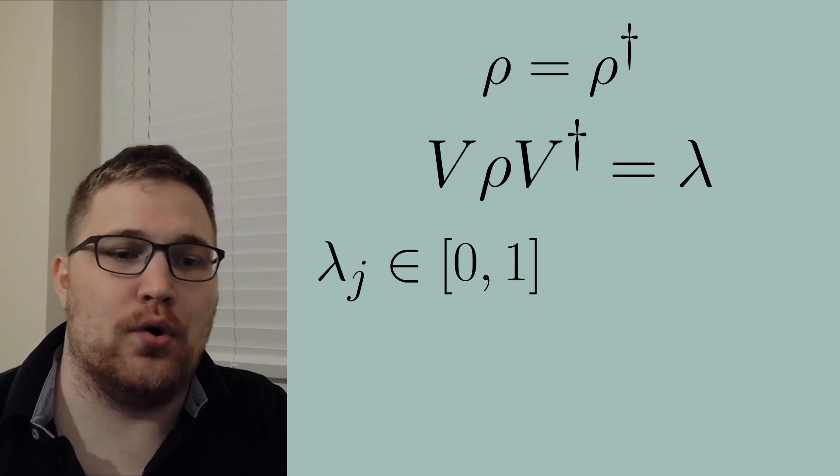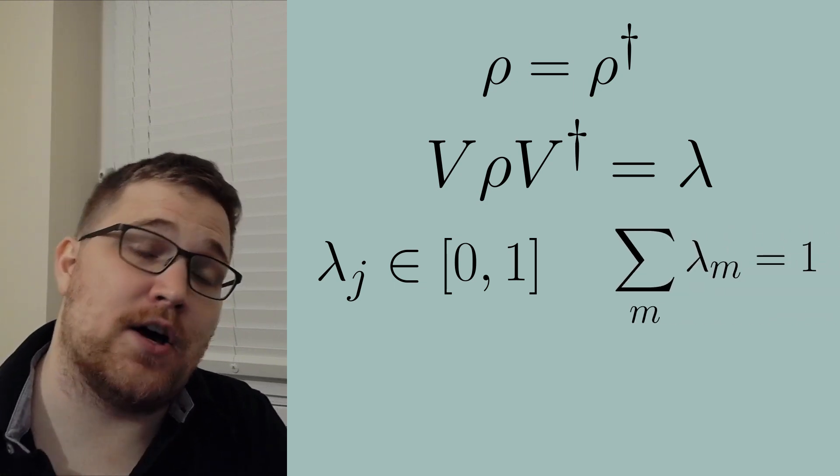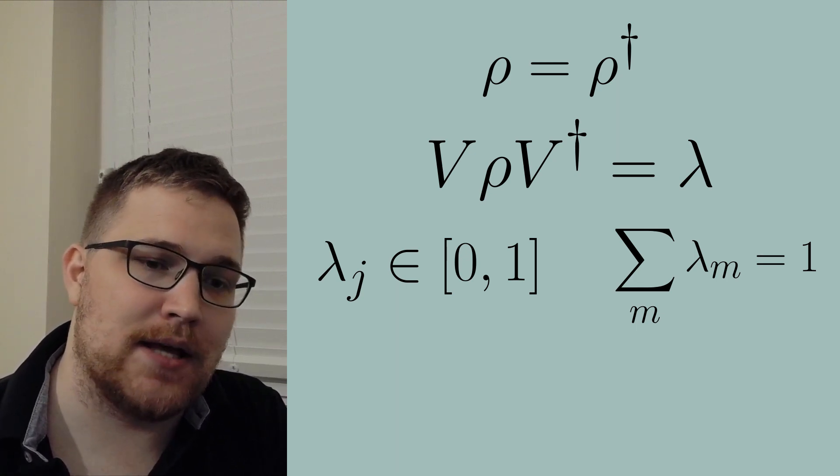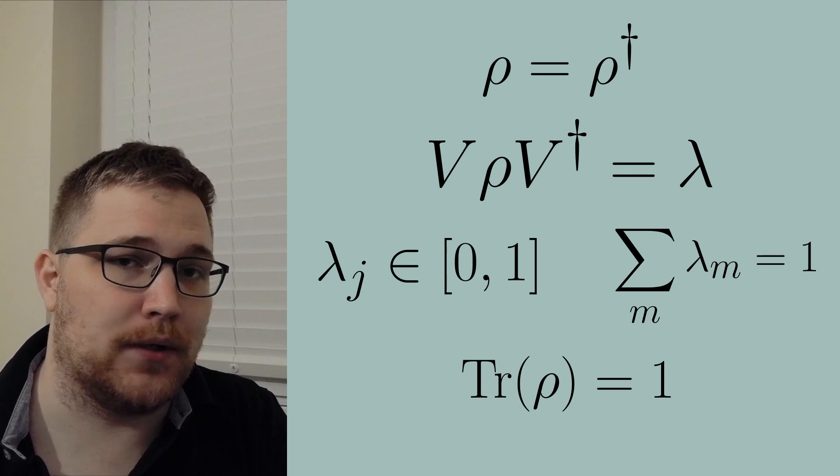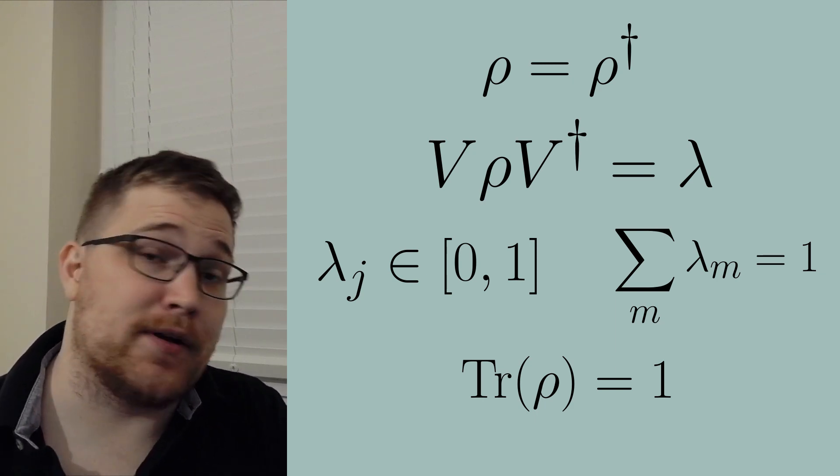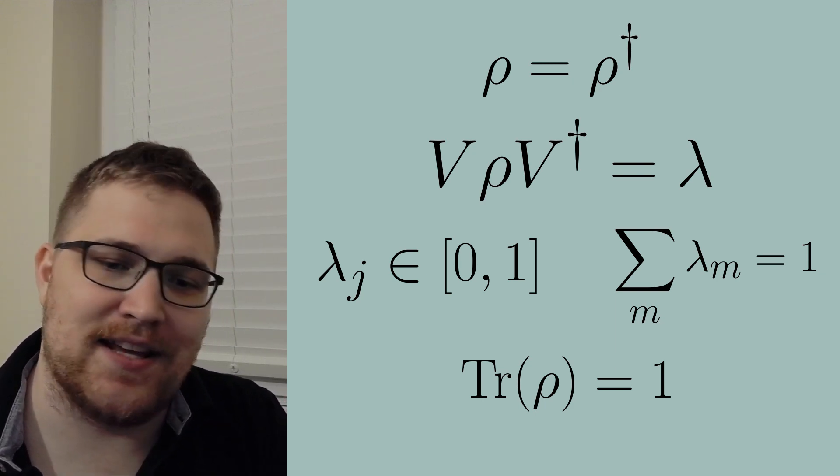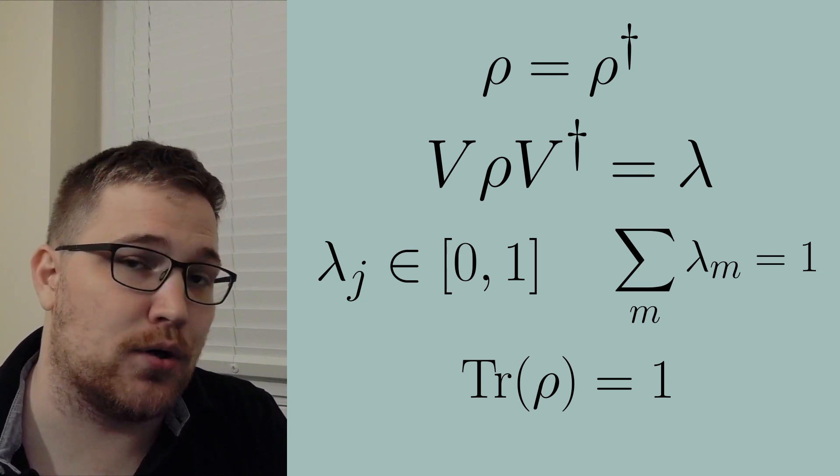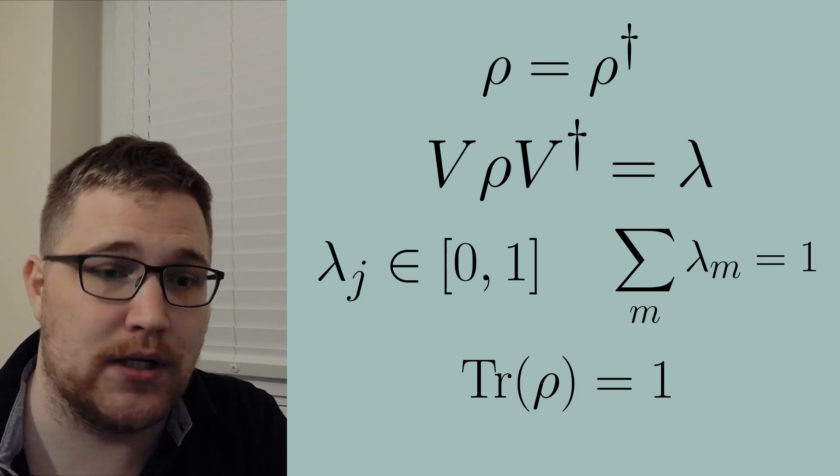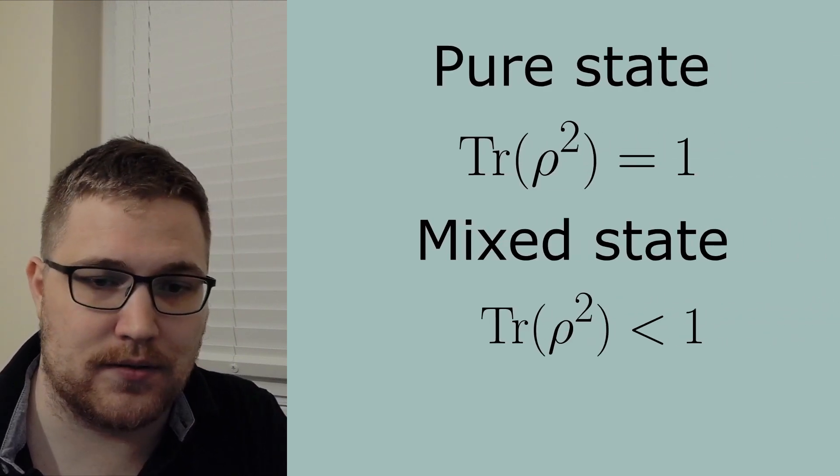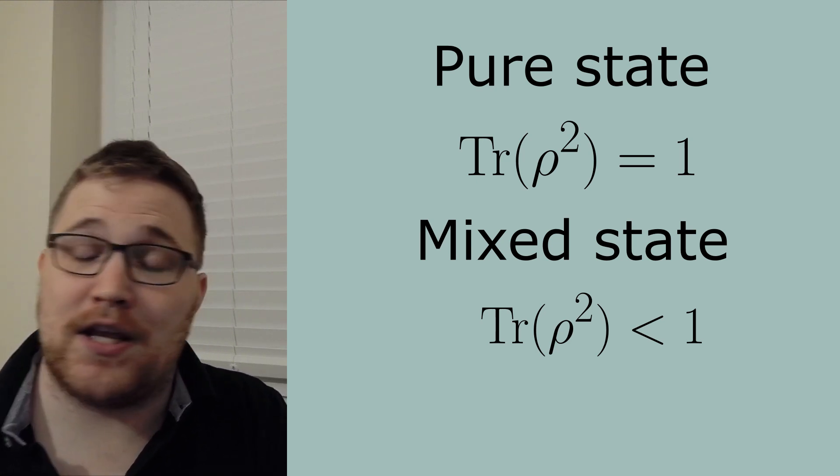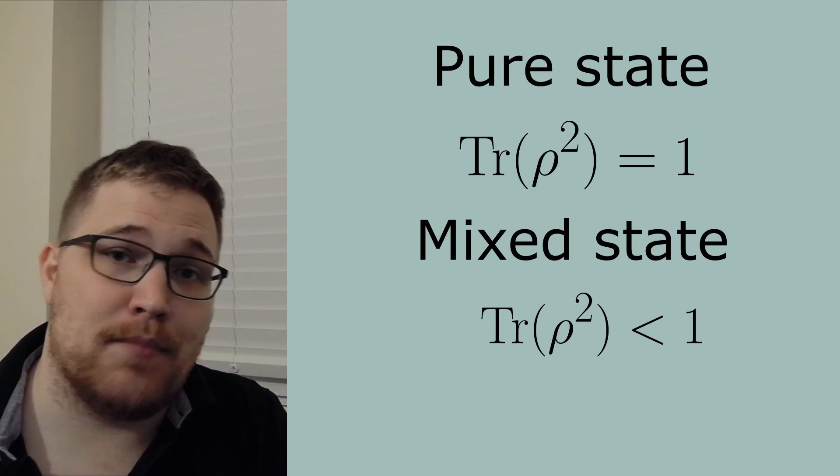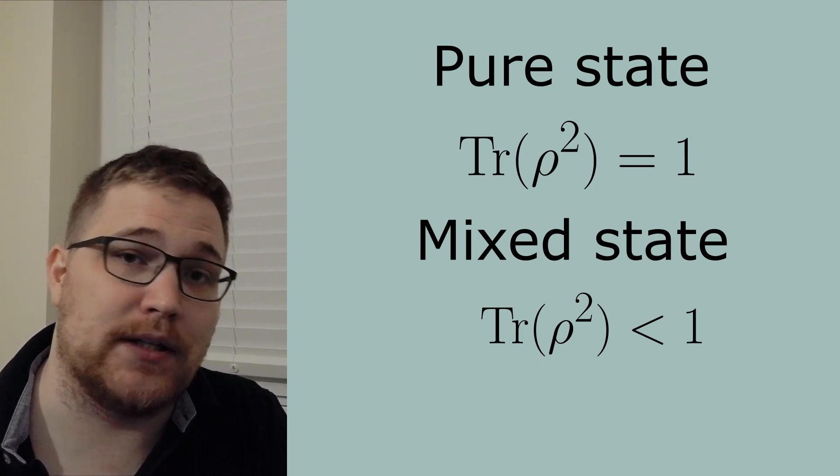These values also sum to 1 and all of these values summing to 1 is equivalent to the statement that the trace of our density matrix ρ is equal to 1. While it isn't quite important for the topic of the video an easy way to test if a density matrix is pure or mixed is to test the so-called purity which is the trace of the square of our density matrix. If our density matrix is pure the purity will be equal to 1 and if our density matrix is mixed this result will be strictly less than 1.